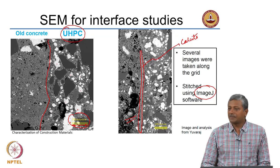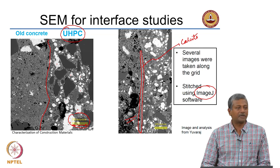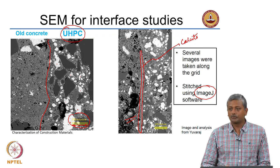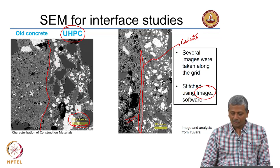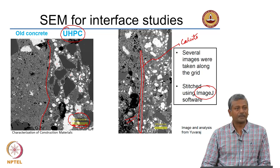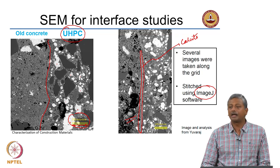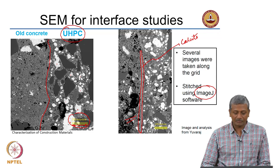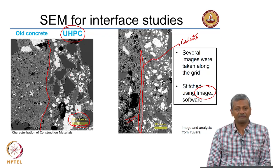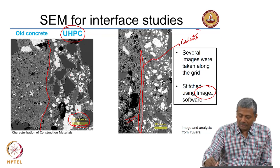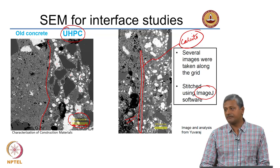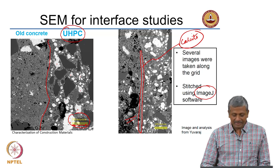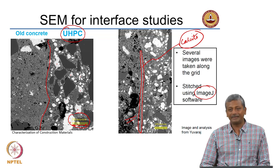We were looking at different examples of the application of scanning electron microscopy, and we saw how usefully it can be utilized to detect differences between different types of phases. When you coat a substrate concrete with an ultra high performance overlay, you can actually make out the distinction between these two types of concrete clearly in an SEM micrograph. In some cases the substrate concrete may have carbonated, which leads to a surface layer of calcite forming, and you can clearly see this layer separating the overlay concrete and the substrate.